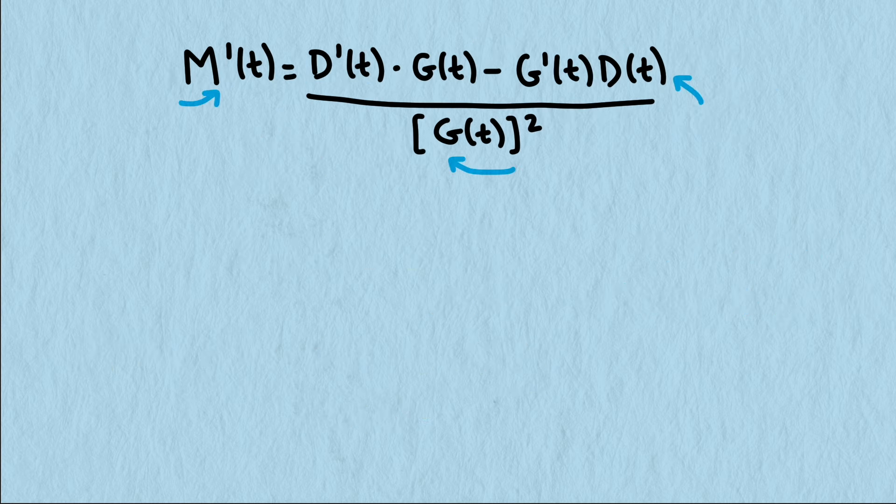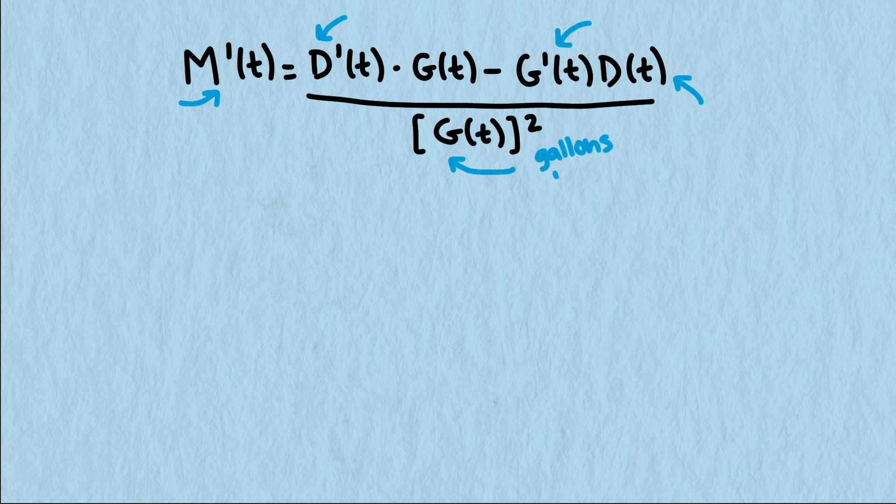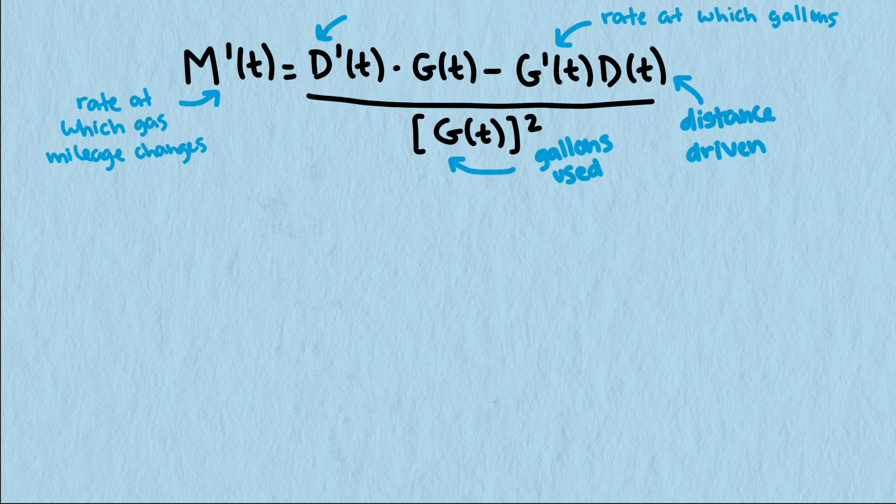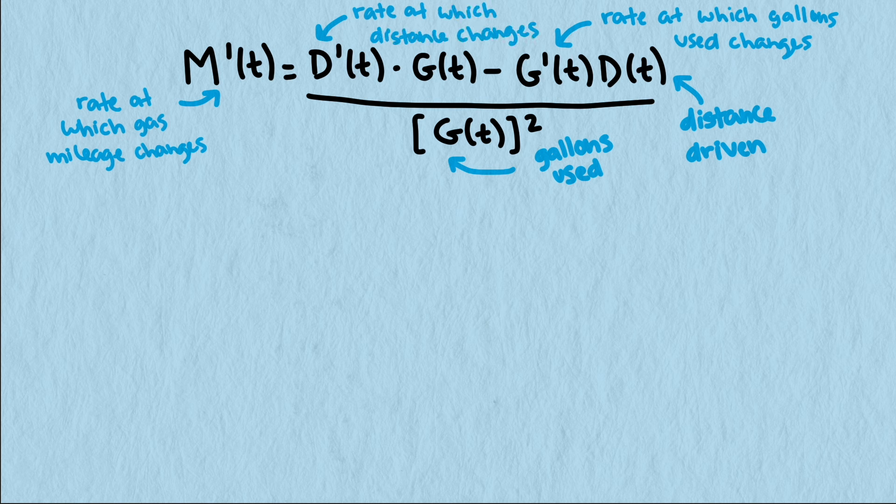Each of these terms has meaning in our situation. g and d still represent the same quantity as the original mileage equation. The primes represent the rate of change of the quantity over time. So m prime is the rate that the gas mileage is changing, g prime is the rate that the gas is being used, and d prime is the rate that the distance the car has driven is changing. We usually just refer to d prime as the speed of the car.